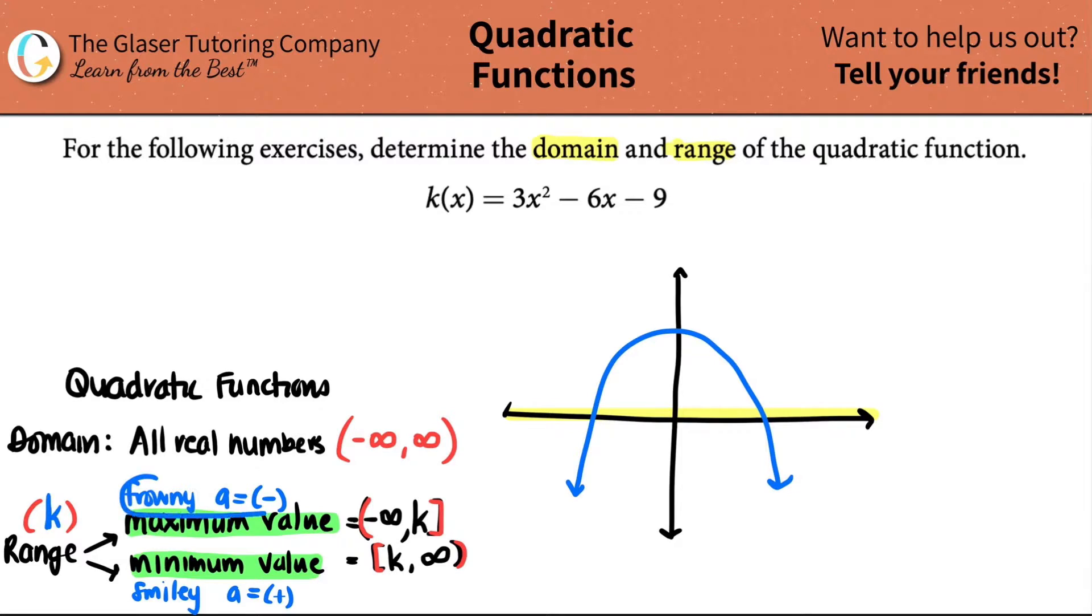Now, this all depends on what type of a quadratic you have. If you have a frowny quadratic where your a value is negative, you actually have a max value. This is a frowny. It frowns. And your max value, you can kind of see it. That's the highest the graph goes, but it will constantly go all the way down to the negative infinity direction. But the capoff is that one.